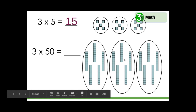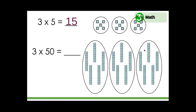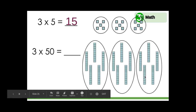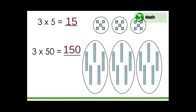Fifty plus fifty equals one hundred. Adding fifty more: one hundred ten, one hundred twenty, one hundred thirty, one hundred forty, one hundred fifty. Three times fifty equals one hundred fifty.